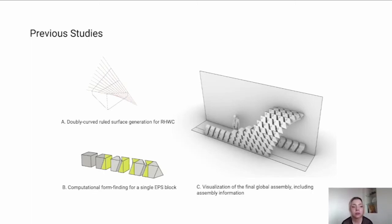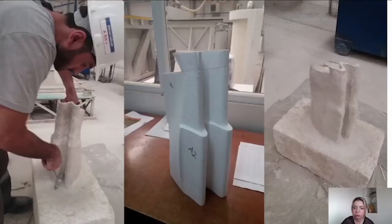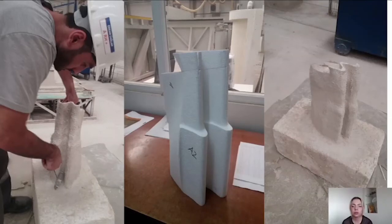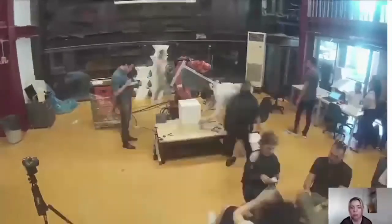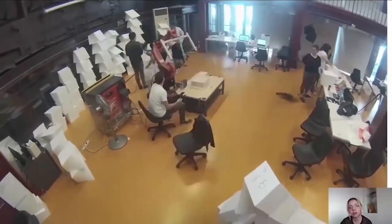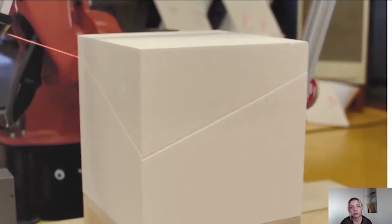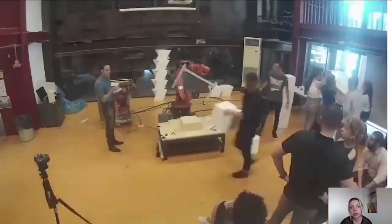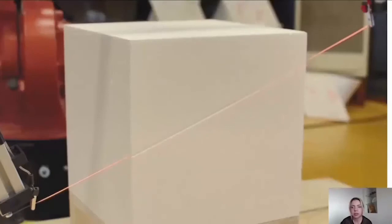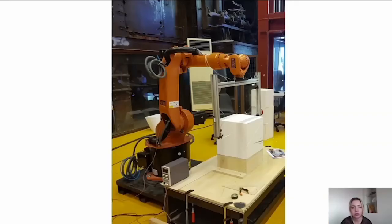As we were developing the computational workflow, our partners Fibrobeton were conducting physical tests in order to observe how much curvature could be induced within a single EPS block to ensure that the GRC spraying process could be run smoothly. And this is the hot wire cutting process in action in studio showing how each piece was cut and then tagged and then semi-assembled indoors with the robotic fabrication setup.